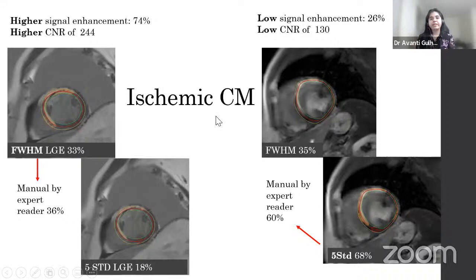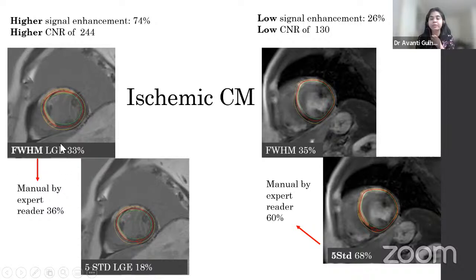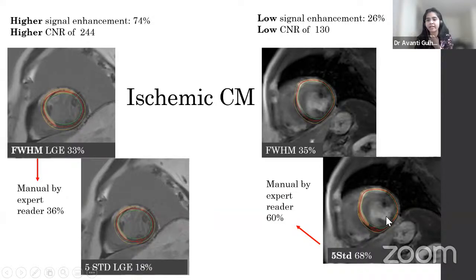In an ischemic cardiomyopathy patient, one set of images had higher image quality — higher signal enhancement percent and higher contrast-to-noise ratio — while the other set had lower values. The semi-quantitative analysis showed that with better image quality, full width at half maximum was more accurate and closer to manual scar analysis. With lower image quality, the 5 SD method performed better and had a better correlation with manual contouring, while full width at half maximum underestimated the scar.